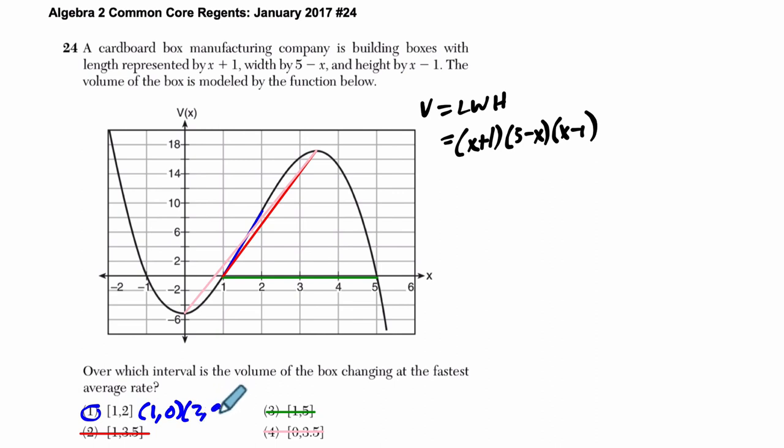And that slope is the output subtracted, 9 minus 0. So I'm going to write this over here. 9 minus 0 over 2 minus 1. So it has a slope of 9 over 1, or just 9. And that's pretty high.